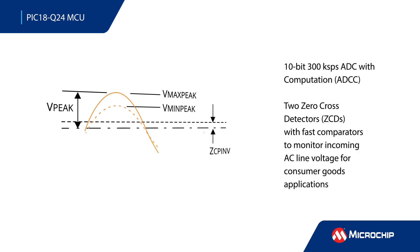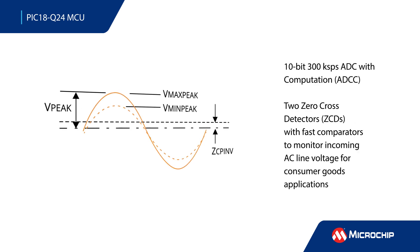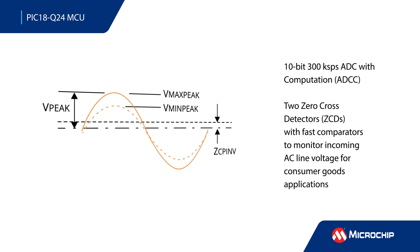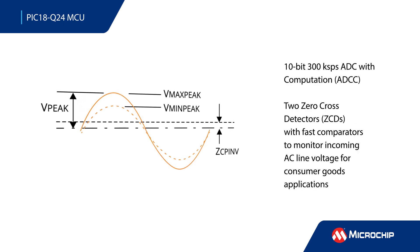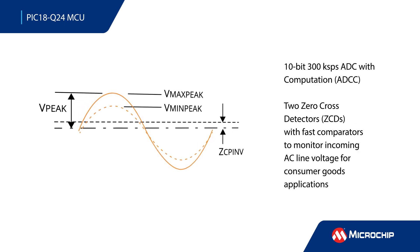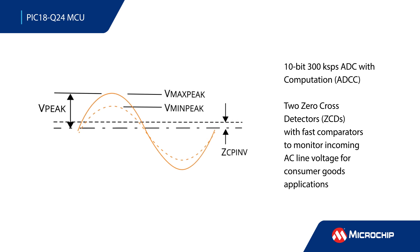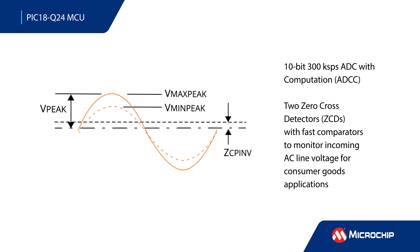These MCUs feature a 10-bit, 300-kilo-sample ADC with computation and two zero-cross detectors with fast comparators for performing fast and precise analog measurements and monitoring the AC line voltage for consumer goods.